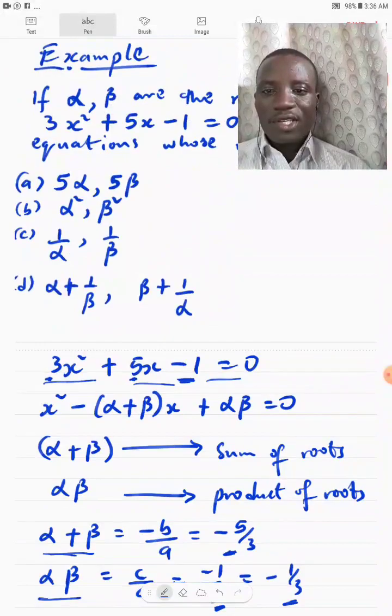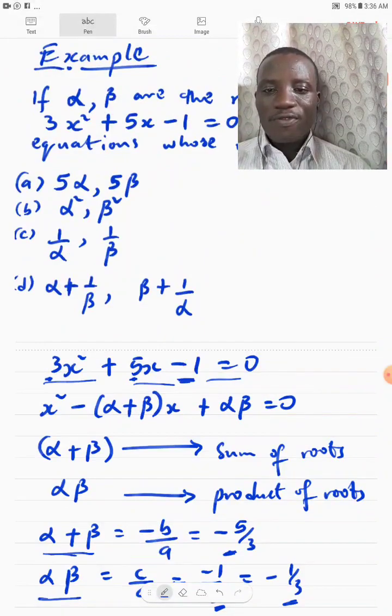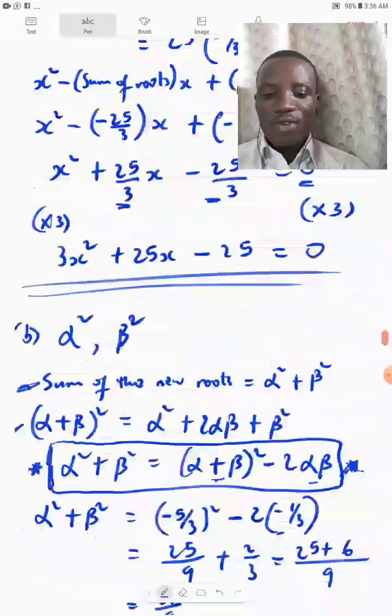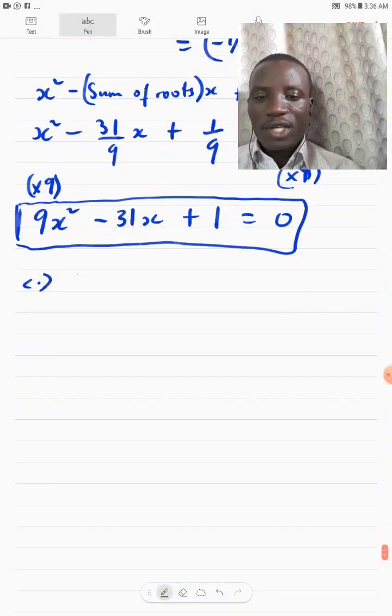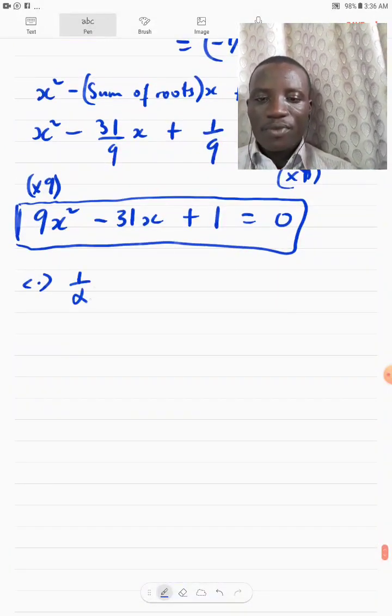So, I see the new roots are now 1 over alpha, 1 over beta. Okay, so let's write that. 1 over alpha, 1 over beta.